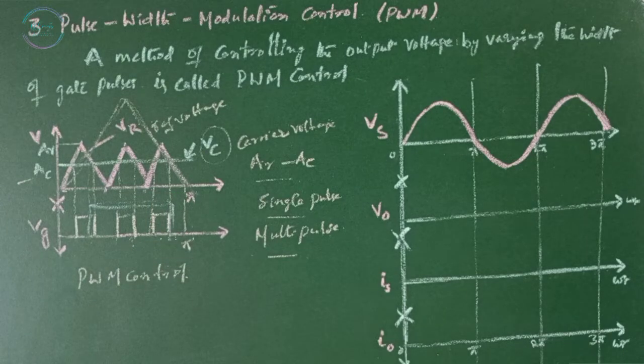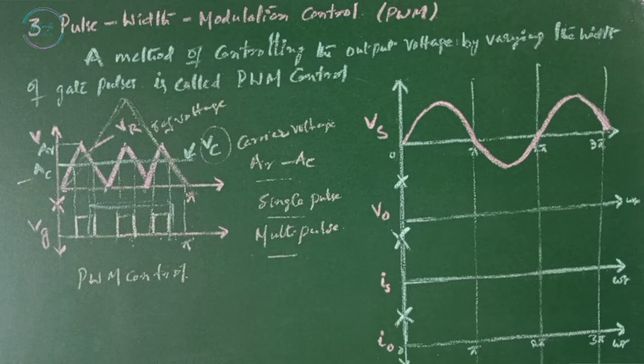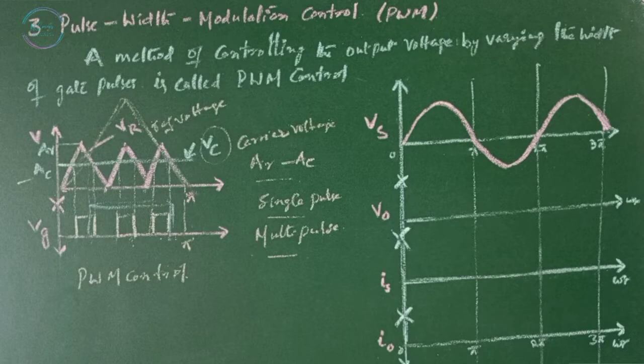With this method, lower order harmonics can be eliminated or reduced by selecting the number of pulses per half cycle. However, increasing the number of pulses would also increase the magnitude of higher order harmonics, which could easily be filtered out.